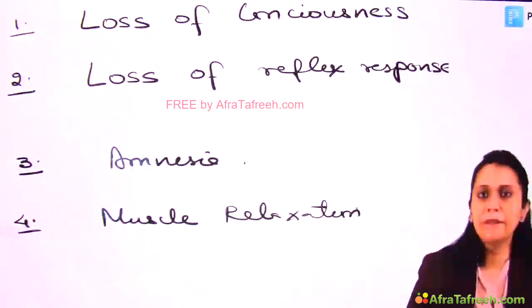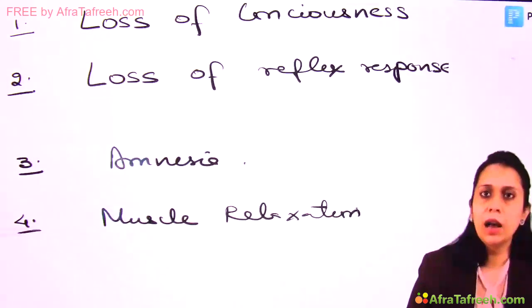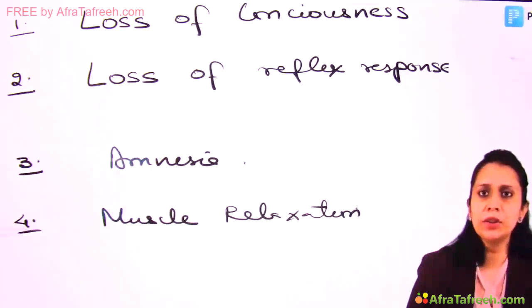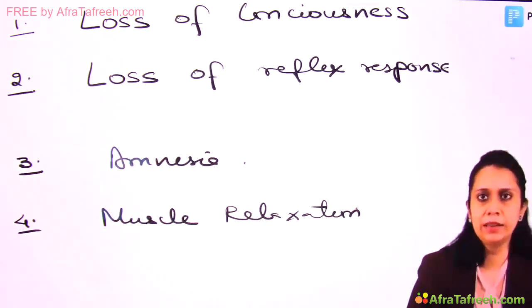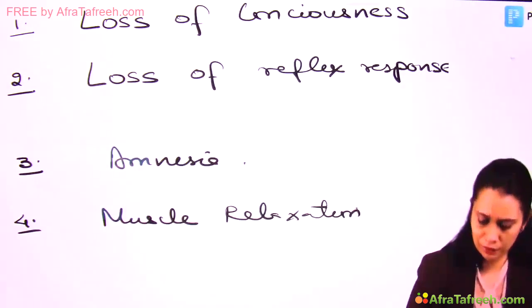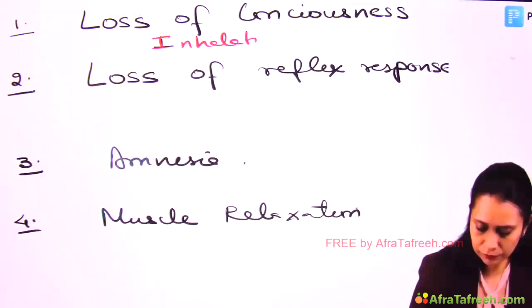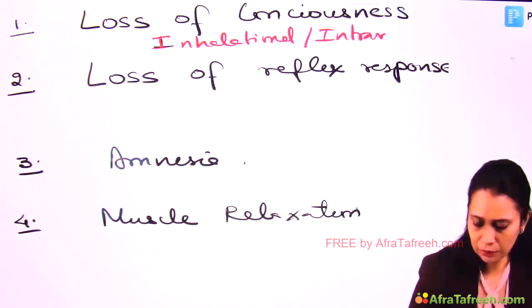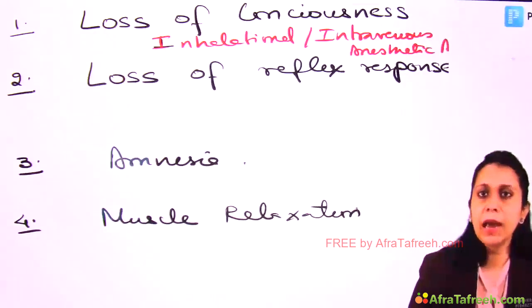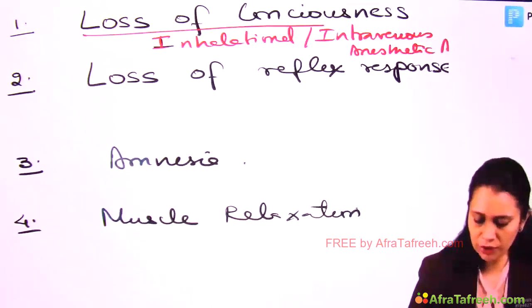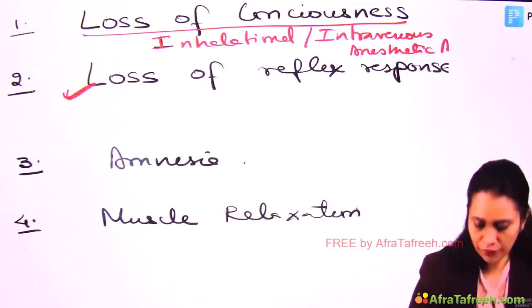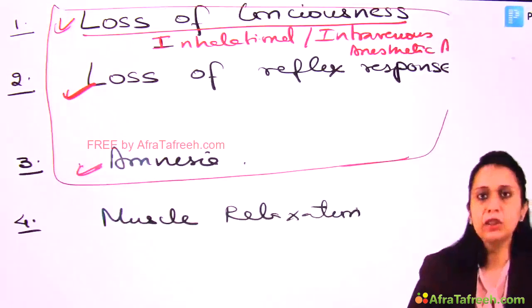What are the multiple drugs used for these five components? For loss of consciousness, we use inhalational anesthetic agents or intravenous anesthetic agents. All the drugs which produce loss of consciousness also produce loss of reflex response and amnesia. So these three components of General Anesthesia are provided by inhalational and intravenous anesthetic agents.